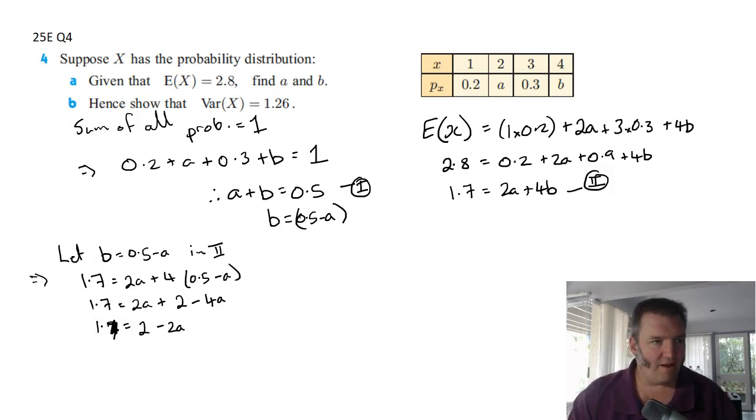In fact, let's rub it out and make sure it looks like 1.7. That would be even better, wouldn't it? It's a bit trickier writing on this one than it is writing on the one I used at school, but that's okay. Either way, I've got negative 2a equals negative 0.3, a equals 0.15, and therefore b is going to equal 0.5 minus 0.15, which of course is 0.35.